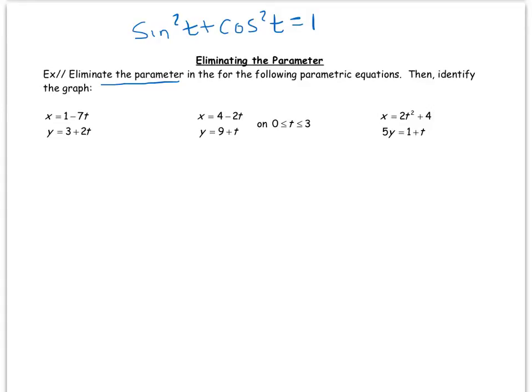So we want to recover the Cartesian form of the equation, and often a simple substitution can do the trick. Once we do that, we're going to identify what the graph is.